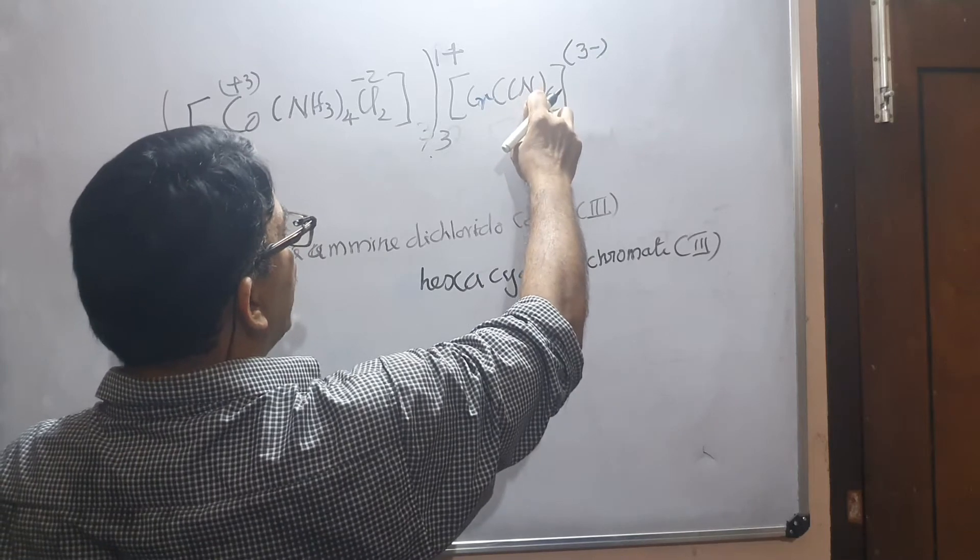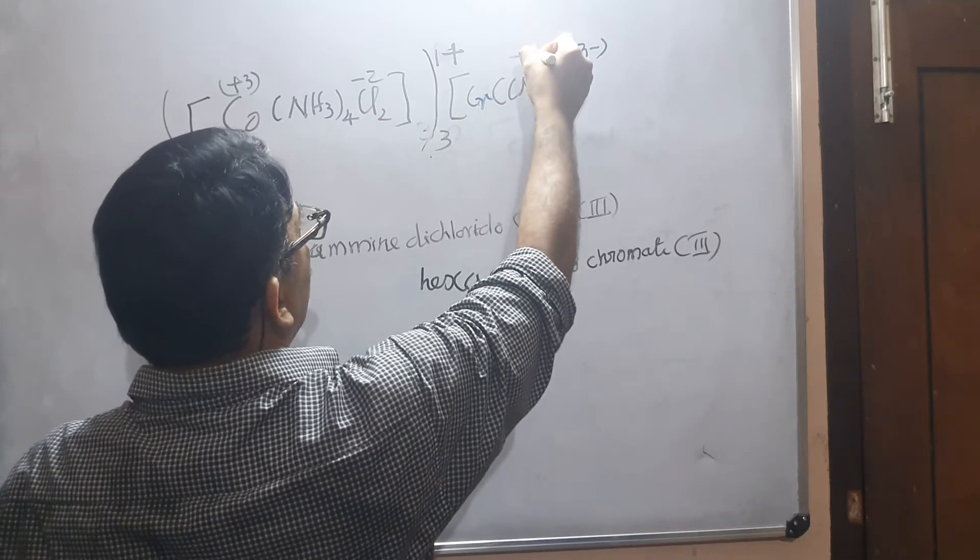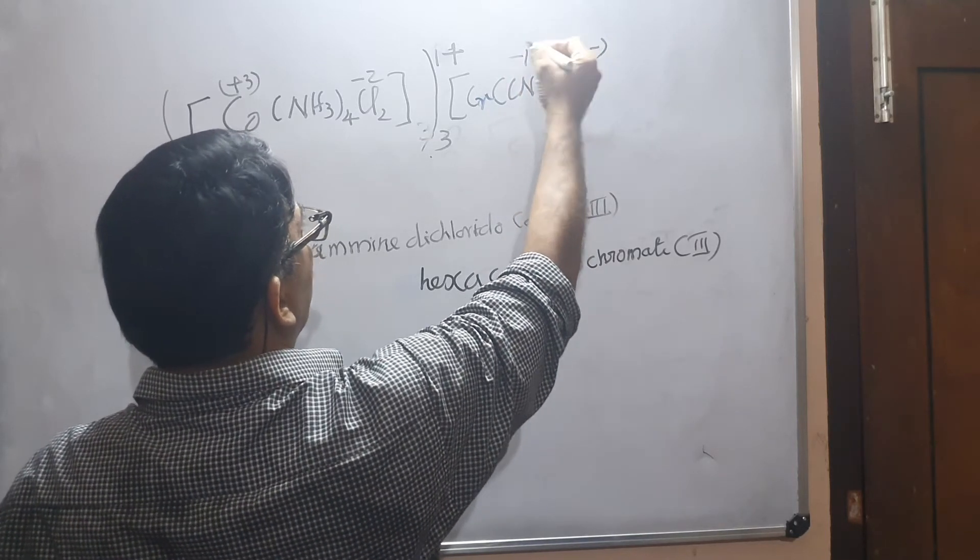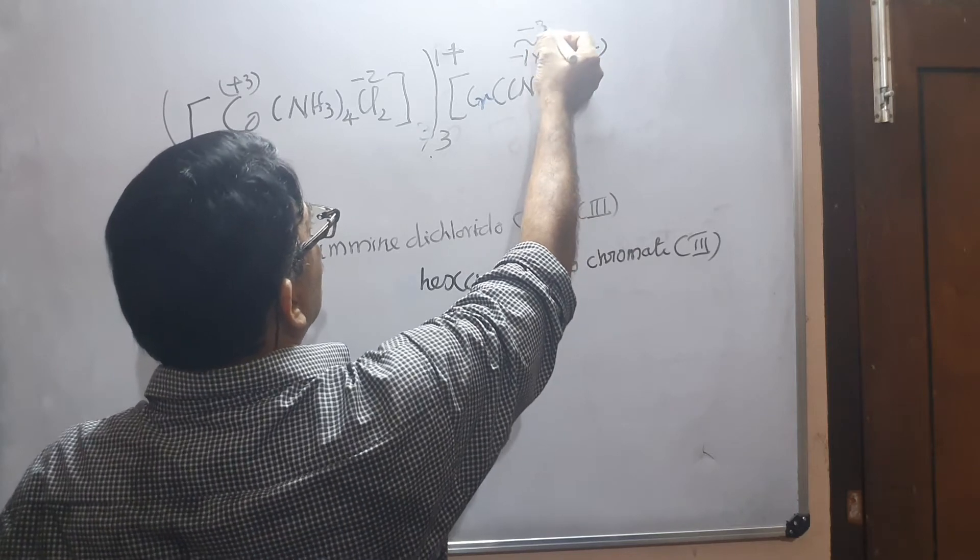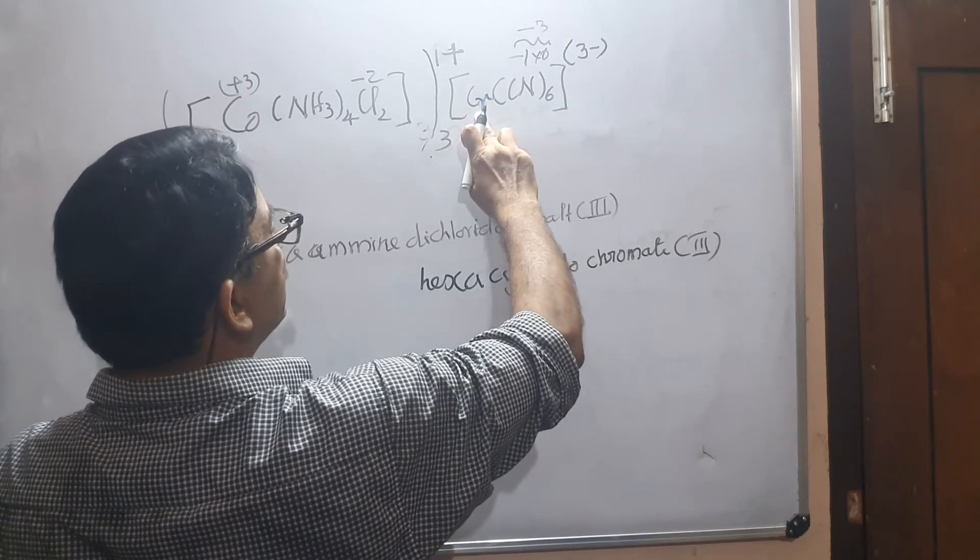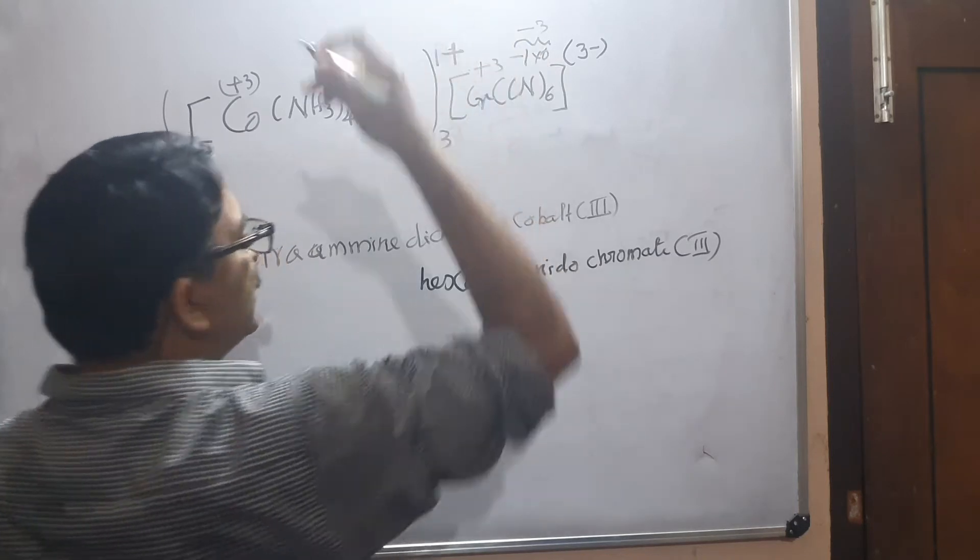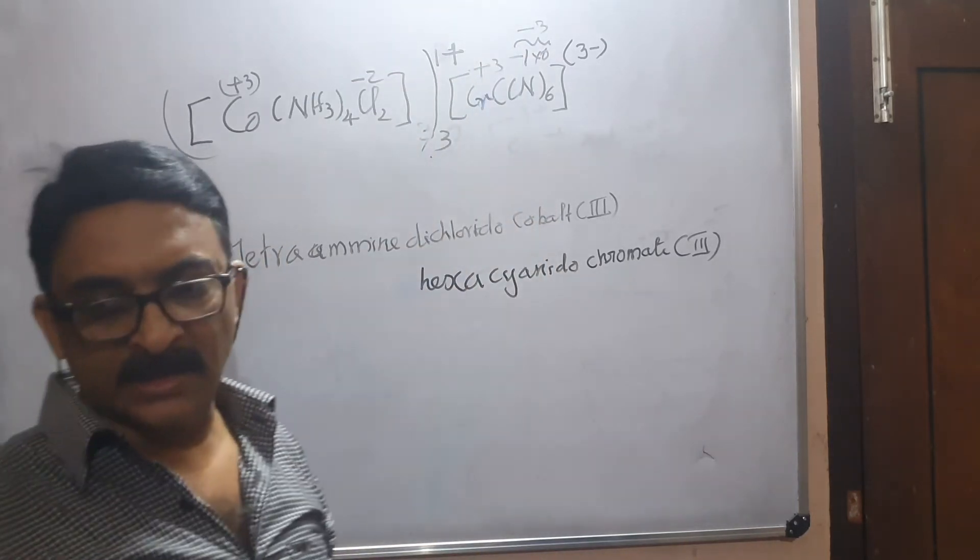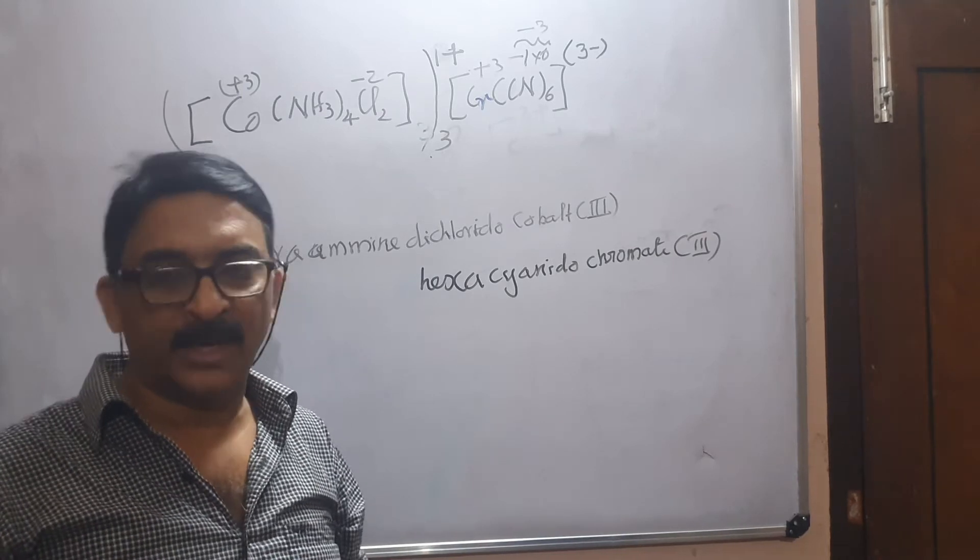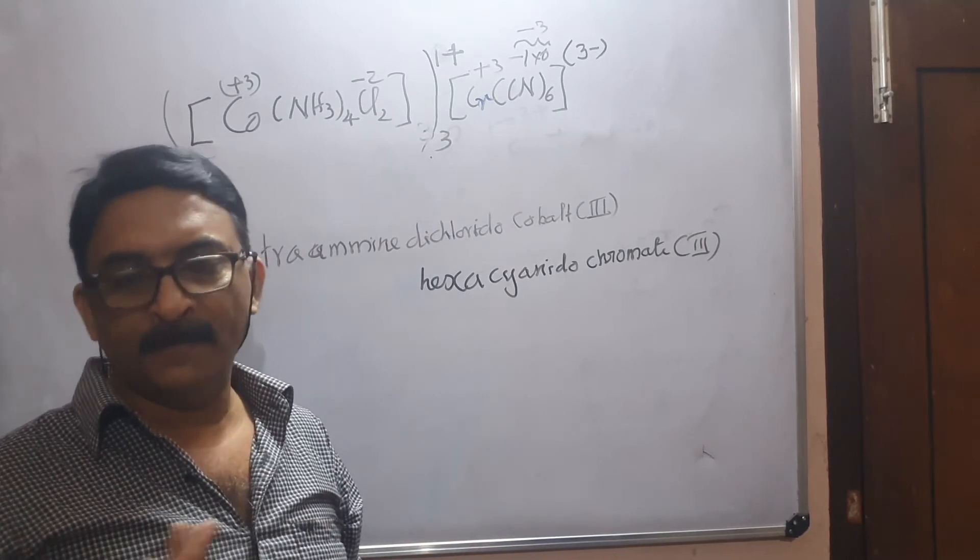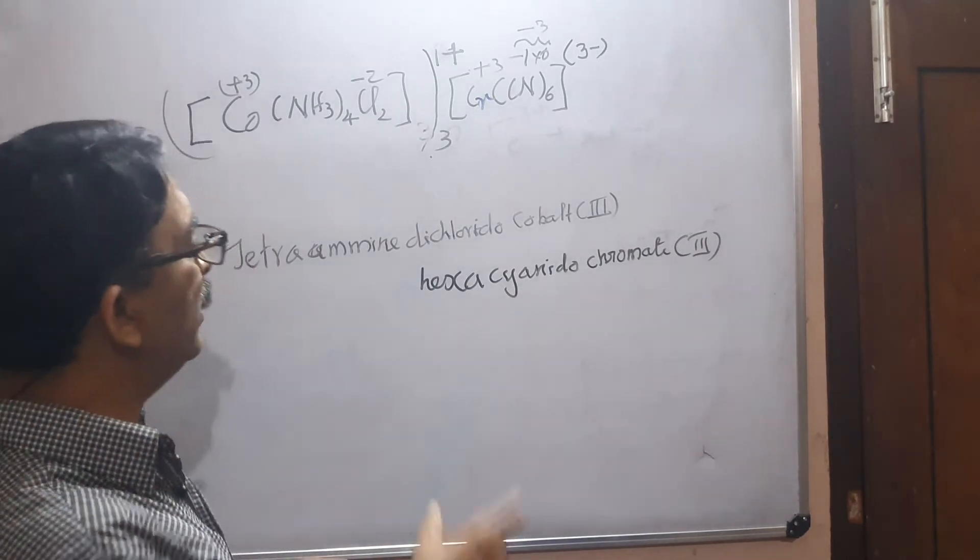Here it is minus three. We know every cyanide is having minus one, so minus one into six is minus three. This cancels three charges, means this chromium is also having plus three. This is the way we decide the charges of the cation and anion.